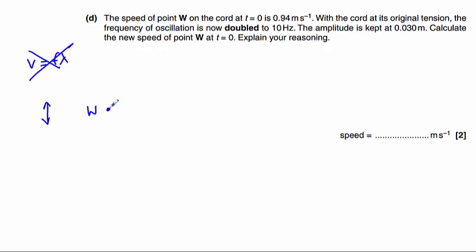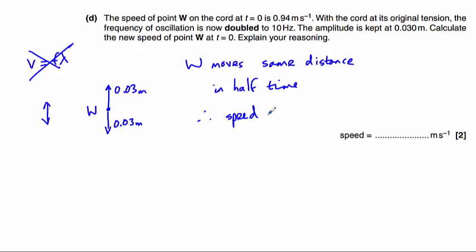Point W has to move 0.03 metres up and 0.03 metres down. If we double the frequency, it means we're going to have twice the number of waves passing through this point per unit time, which means that W will have to cover this distance in half the time, therefore its speed will double. W moves the same distance in half the time, so speed is doubled.